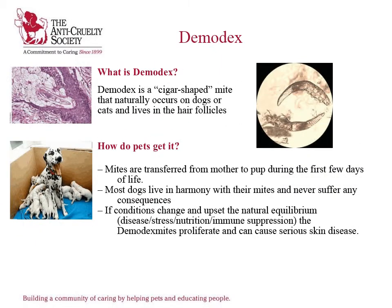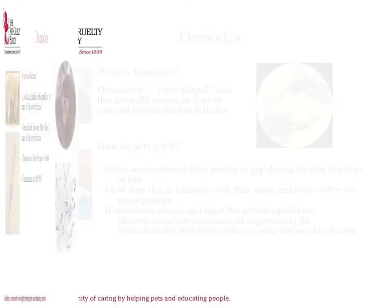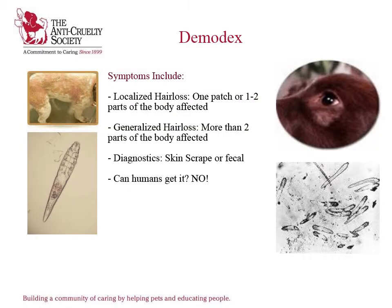Demodex is a mite that lives in the hair follicles of dogs and cats. Demodex is transferred from the mother in the early first few days of life. Symptoms of Demodex include hair loss of a localized area, or when more than two parts of the body are affected. Diagnoses is done through a skin scrape or a fecal. Demodex is not transferable to humans.